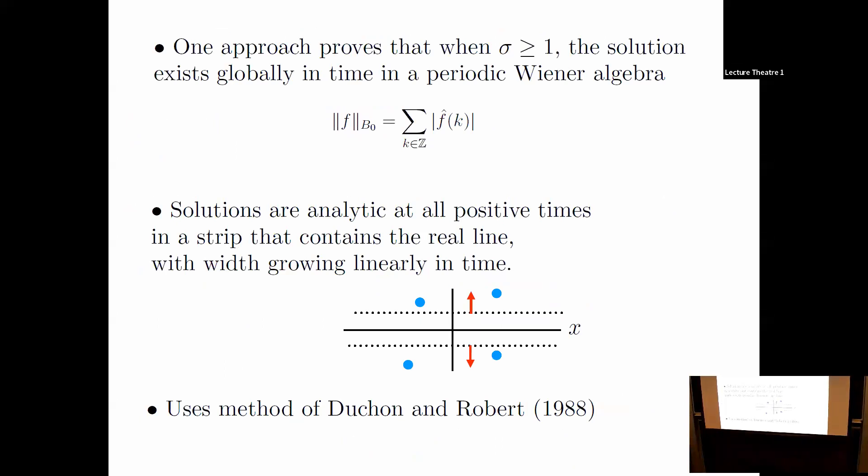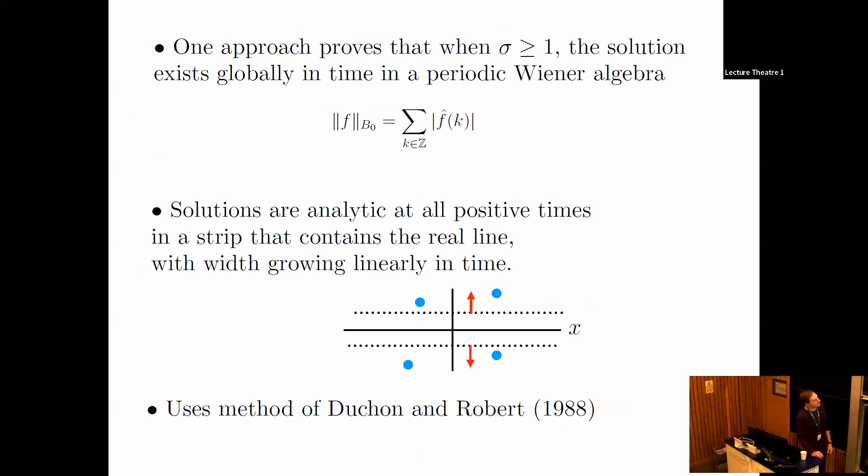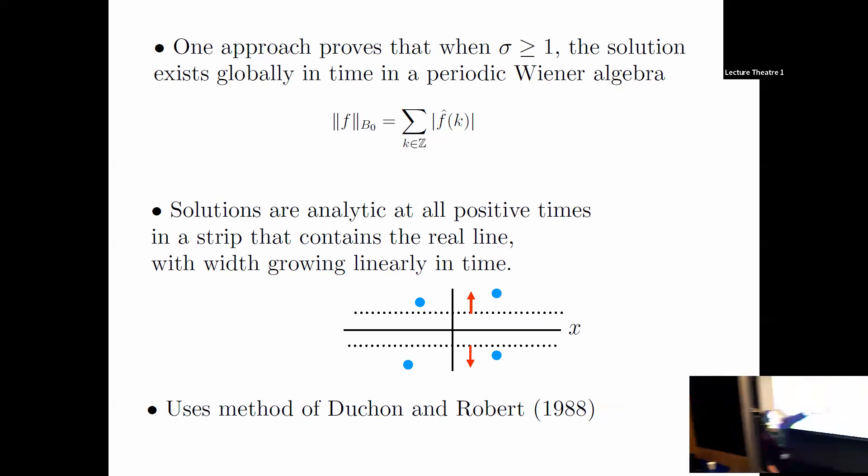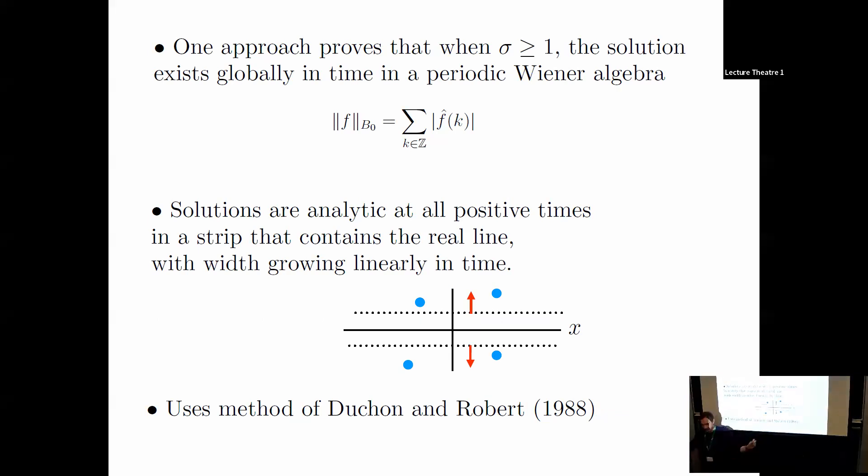One approach proves that when sigma is greater than or equal to one, the solution exists globally in time for small data in a periodic Wiener algebra—which just means a norm that's finite if the Fourier coefficients are summable. This proof shows that solutions are analytic at all positive times in a strip containing the real line with width growing linearly in time. The singularities have to be bounded away farther as you go up in time.